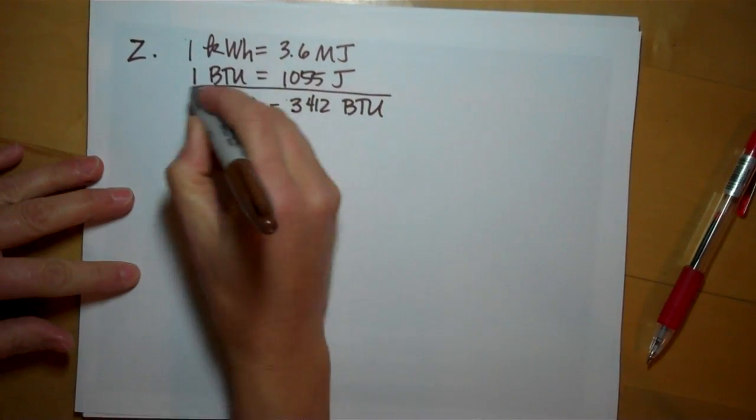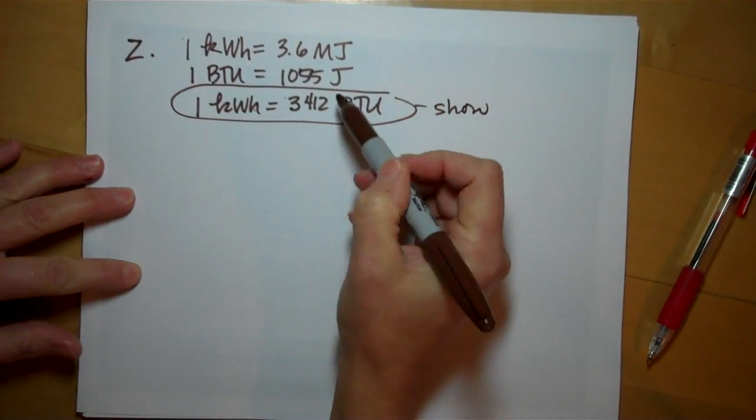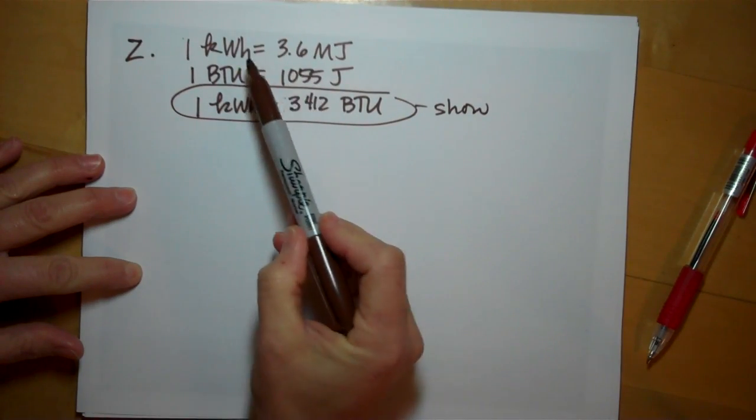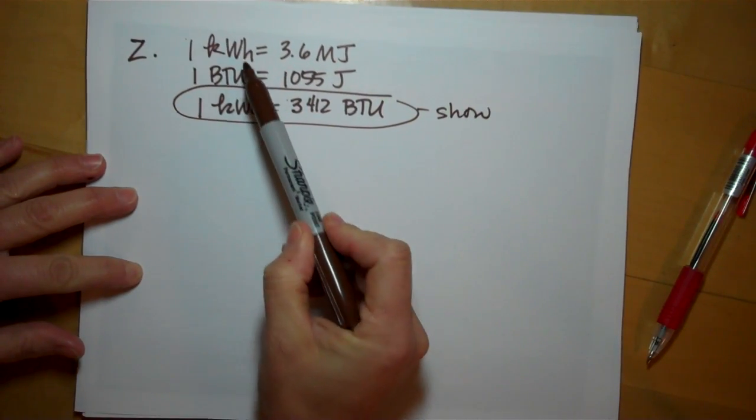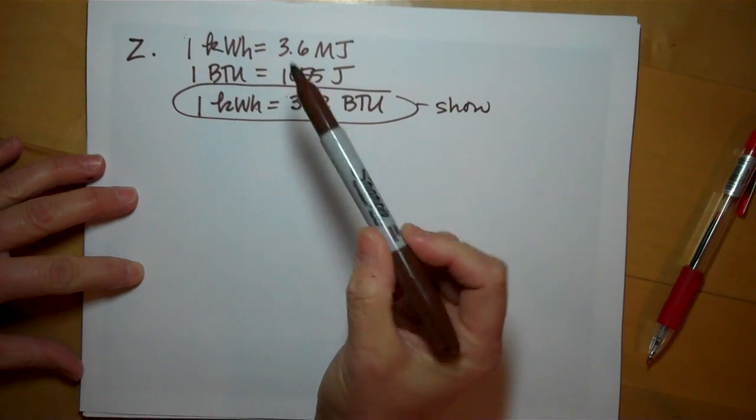Oh, it wants us to show this. It wants us to prove this. So it's a pretty straightforward set of conversions. We want to get from here to here, and we're going to have to go through joules to get there.